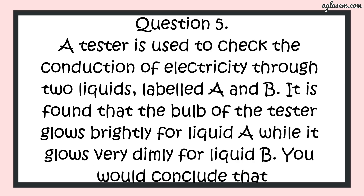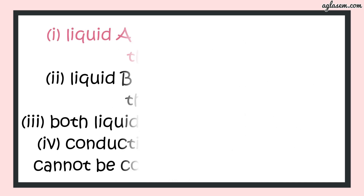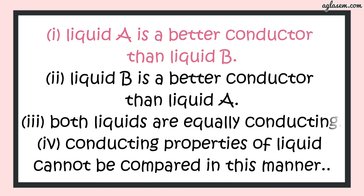Question number 5 says: a tester is used to check the conduction of electricity through two liquids labeled A and B. It is found that the bulb of a tester glows brightly for liquid A while it glows very dimly for liquid B. What would you conclude? Options: 1. Liquid A is a better conductor than liquid B. 2. Liquid B is a better conductor than liquid A. 3. Both liquids are equally conducting. 4. Conducting properties of liquid cannot be compared in this manner. The answer is: 1, that is, liquid A is a better conductor than liquid B.